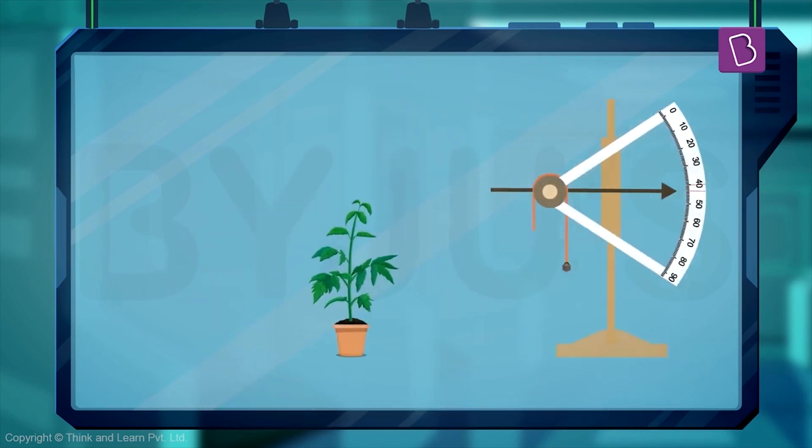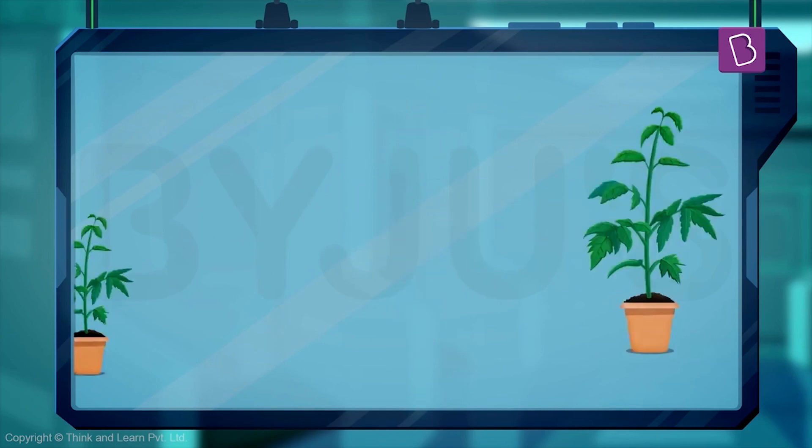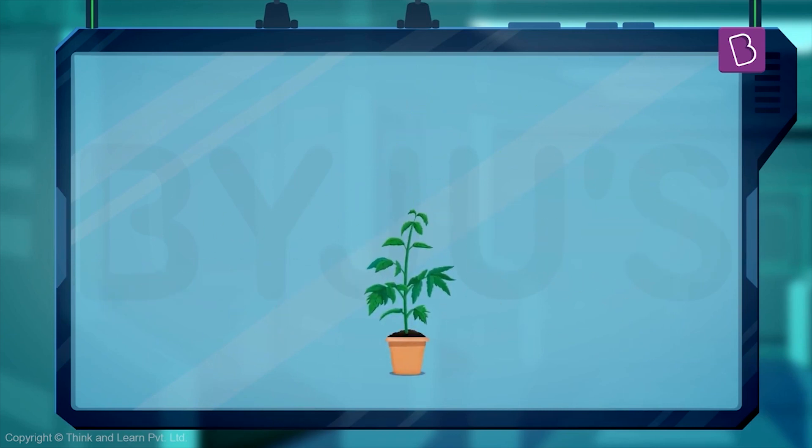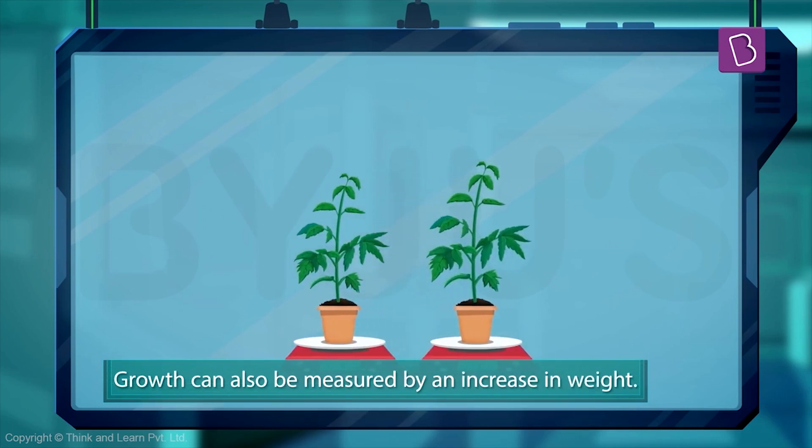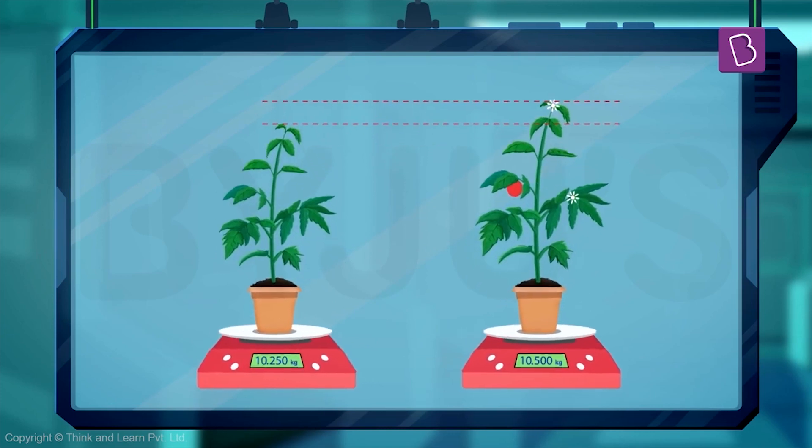Another simple way to measure how well a plant is growing is to measure its weight. The greater the weight, the more it's growing, the bigger it's getting. The best way to do it is just to weigh the plant on something like a weighing balance or a simple weight machine.